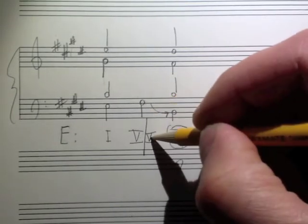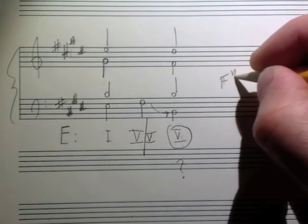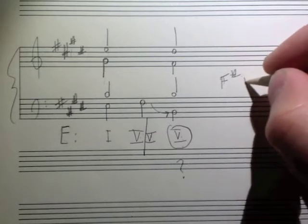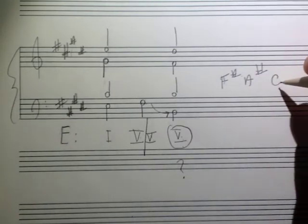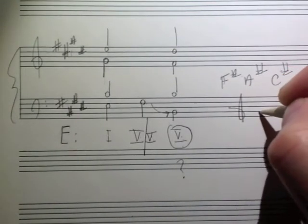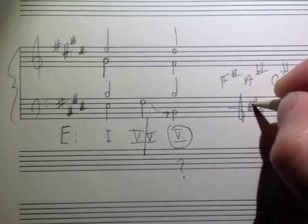An F sharp major chord. So how do you spell an F sharp major chord? It's an F sharp. What's a major third up from that? It's an A sharp. And then what's the P5 off that F sharp? It's a C sharp. So you need the tones F sharp, A sharp, and you need a C sharp.